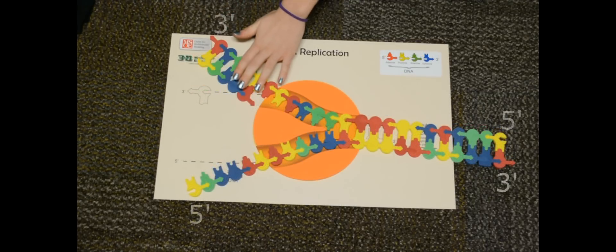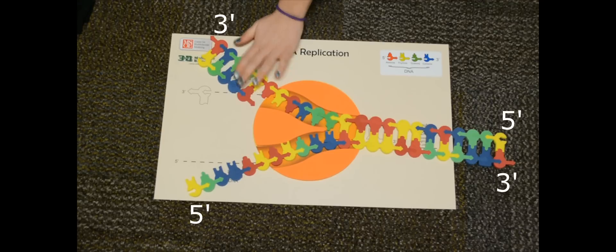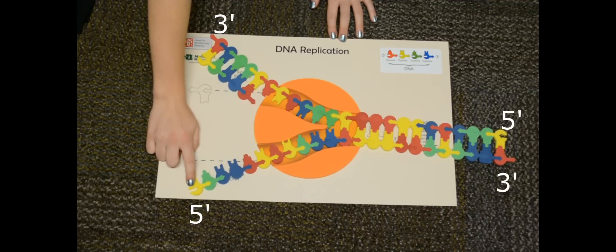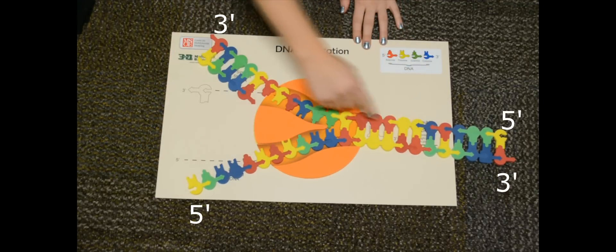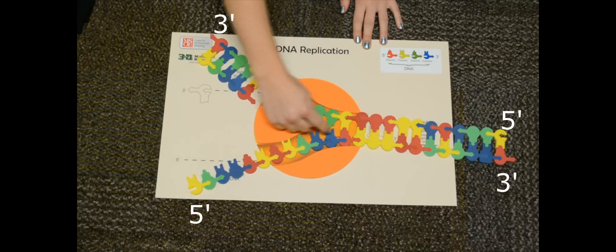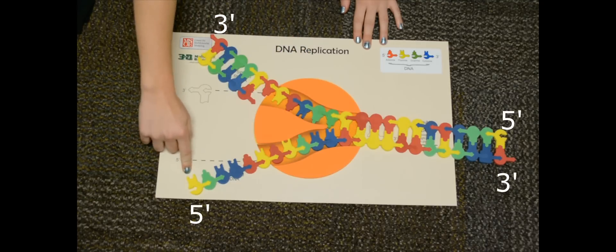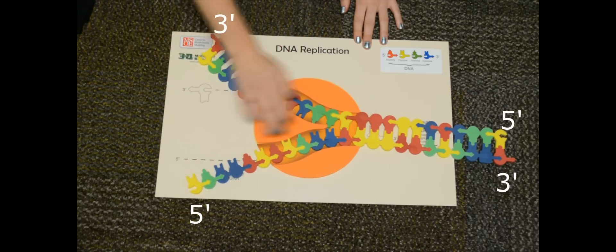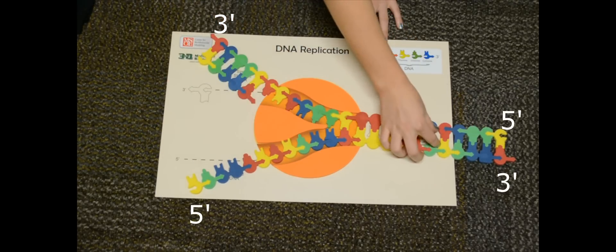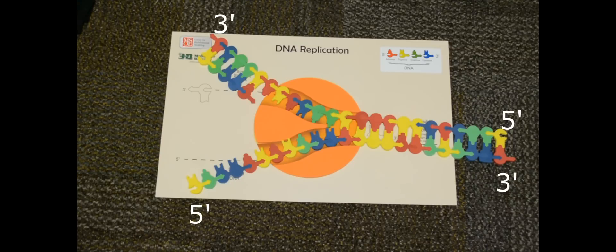This is what the leading strand looks like when you add most of the nucleotides on. The next strand is called the lagging strand, and it's a little bit more difficult because here we have it going 5' to 3' on the template, but the complementary strand has to go 5' to 3' like this. Since the helicase hasn't finished unzipping the whole thing, it can't start over here because this isn't undone yet. So they're going to be built in fragments, which are called Okazaki fragments.